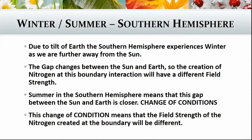The hemisphere experiences winter as we are further away from the sun, and obviously you'd have summer in the northern hemisphere. This gap changes between the sun and the earth, so the creation of the nitrogen at this boundary interaction will have a different field strength. Summer in the southern hemisphere means that the gap between the sun and the earth is closer, so we've changed the conditions, and this means the field strength of the nitrogen created at the boundary will be different.